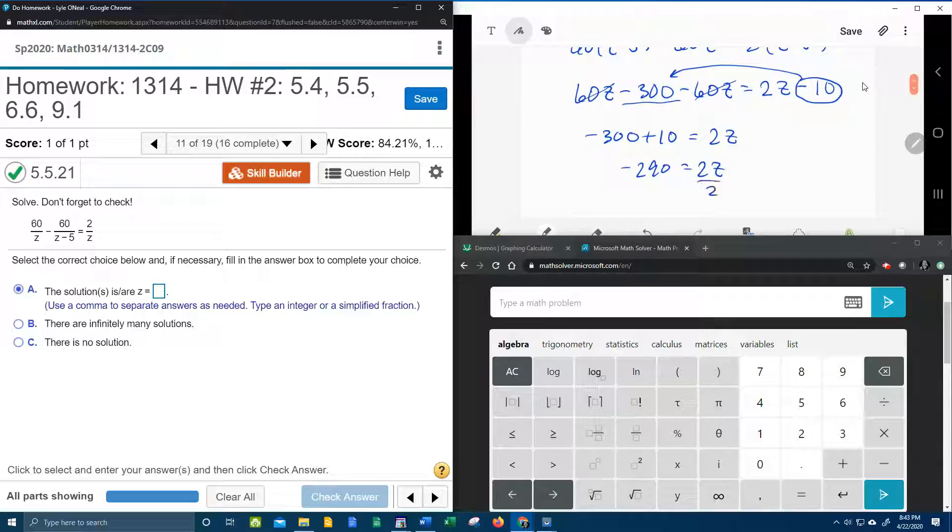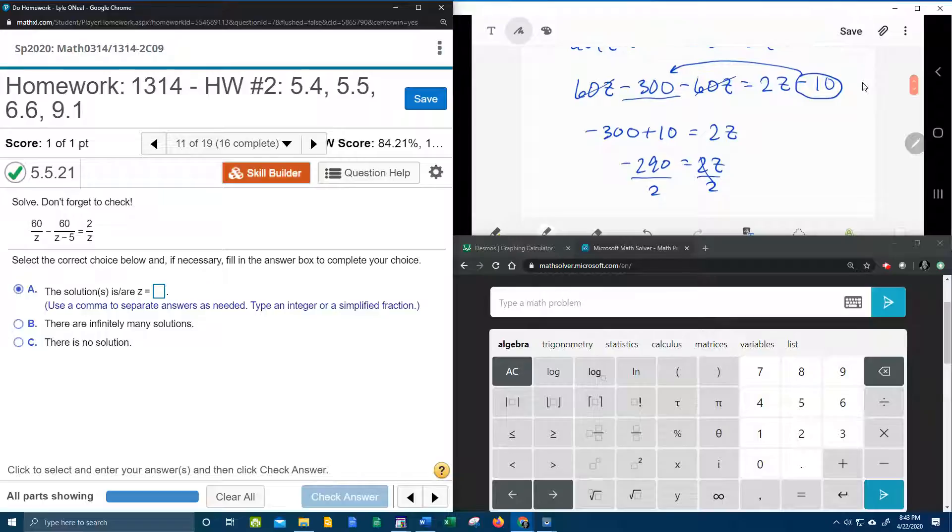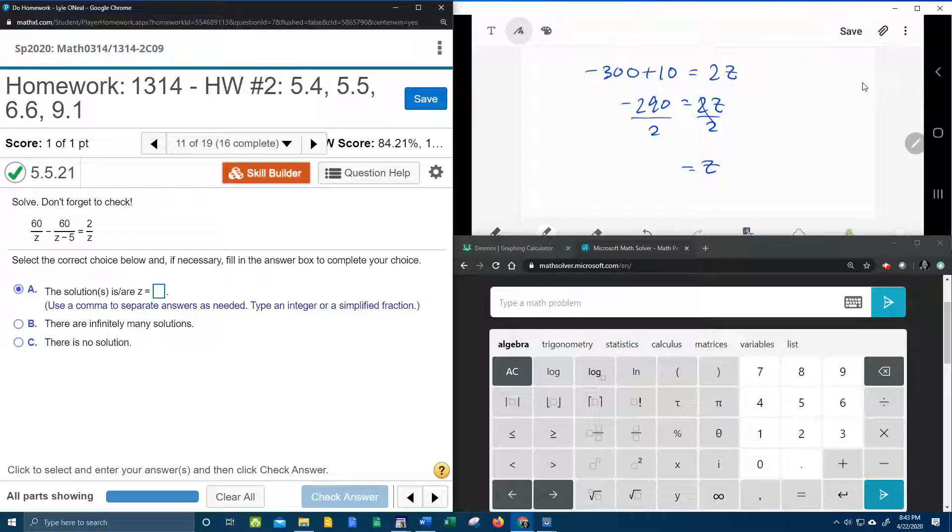And then if I divide both sides by 2 so that we can get the z by itself, again using our handy dandy calculator just to make sure, 290 divided by 2, 145. So that's negative 145. And that should be our answer for z.